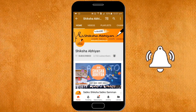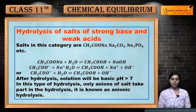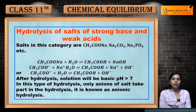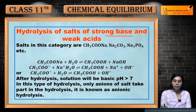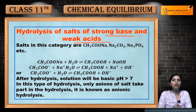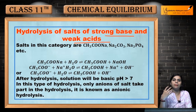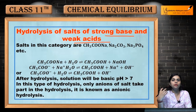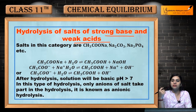Next is hydrolysis of salts of strong base and weak acids. Humne dekha strong acid aur weak base ka, now strong base and weak acid: same, jab aapka base strong hoga to solution kaisa milega aapko? Basic, kyunki usmei kaun se anions involve honge — negatively charged ions usmei involve honge.